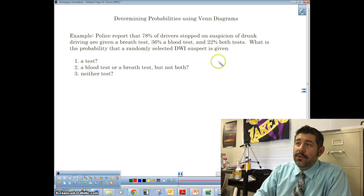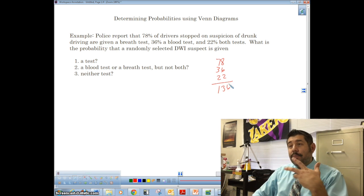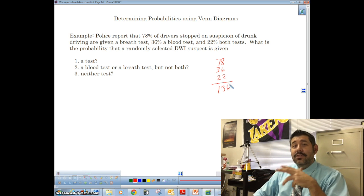Now, here's the thing, folks, if you added this together, 78, 36, and 22, you're going to get 136%. And obviously, probabilities cannot add over 100%.